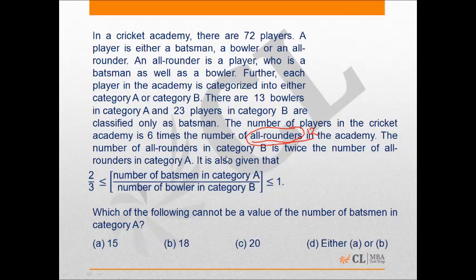The number of all-rounders in category B is twice the number of all-rounders in category A. So the ratio is 1 to 2, meaning the number of all-rounders in category A is 4 and in category B is 8.